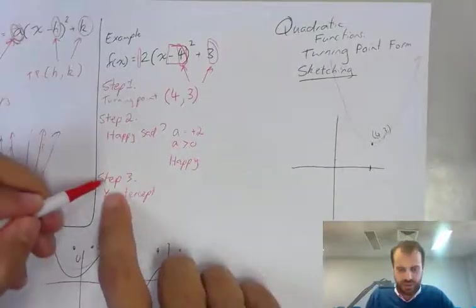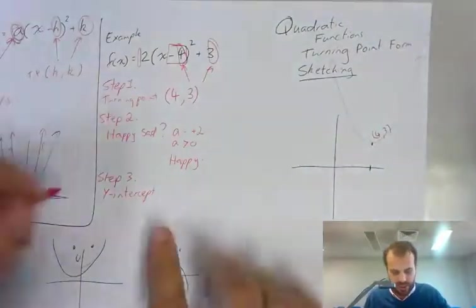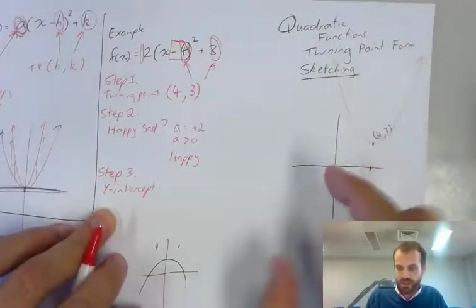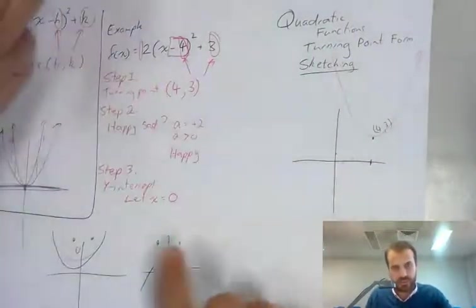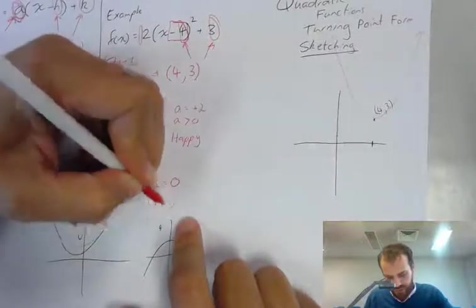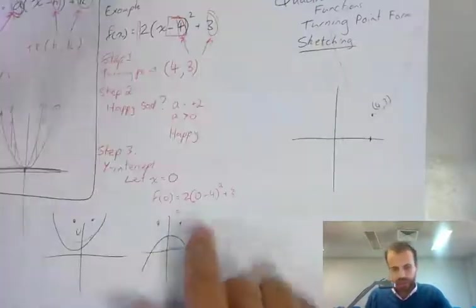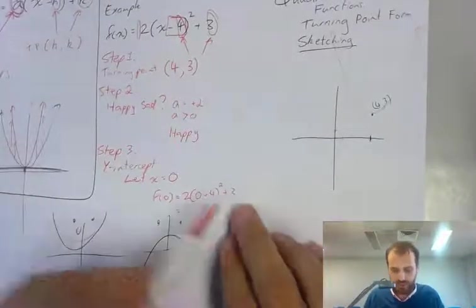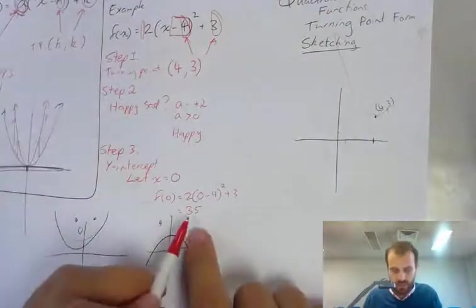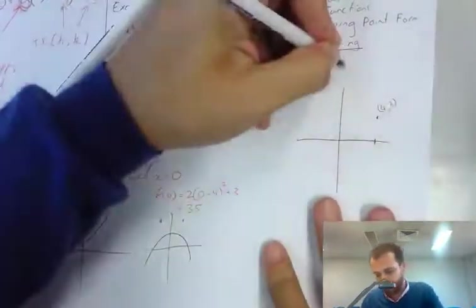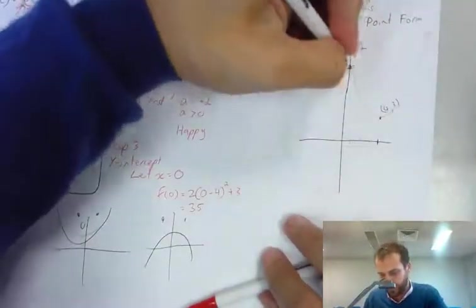Step 3. Step 3 is our y-intercept. We need to find out where this line crosses the y-axis. So if I want to find a y-intercept, it crosses the y-axis where x is equal to 0. So let x equal 0. So f(0) equals 2 times 0 minus 4 squared plus 3. You can type that into your calculator, 2 times 0 minus 4 squared plus 3 and get an answer. That should be 35 there. And that means that our y-intercept is 35.